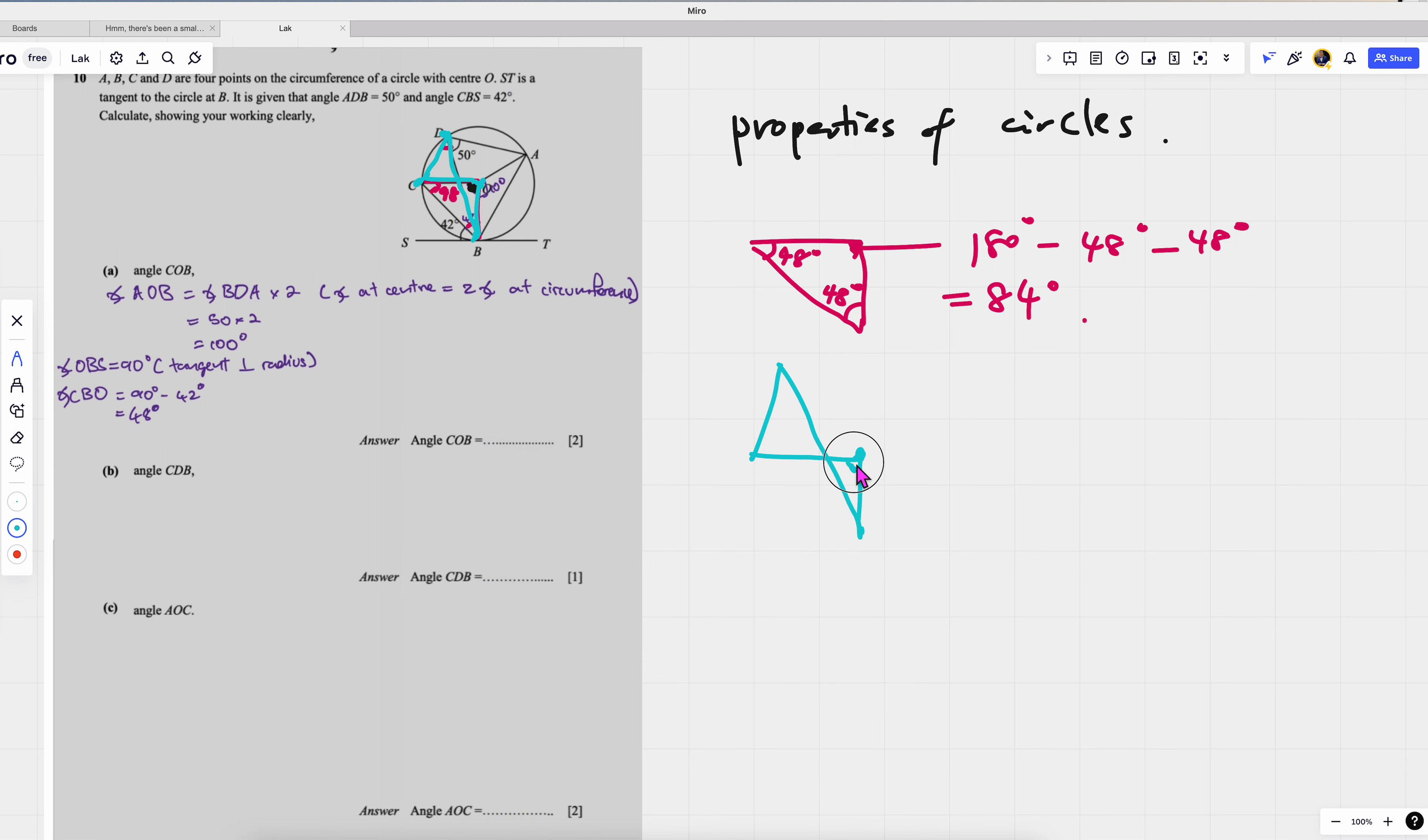But my way of seeing it is this. So if this is the angle at center, okay, so these three points, they are on the circumference. So these three points on the circumference.